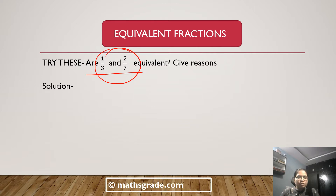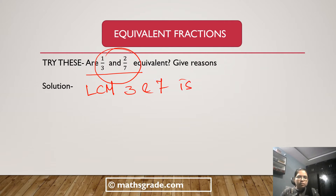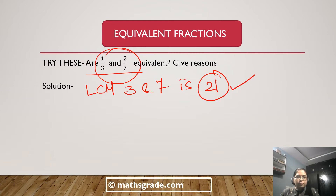For 1/3 and 2/7, first we have to find out the LCM — that is the Least Common Multiple — of the denominators 3 and 7. Here, 3 and 7 are both prime numbers, so the LCM is 3 multiplied by 7, which equals 21. So the LCM of denominators 3 and 7 is 21.